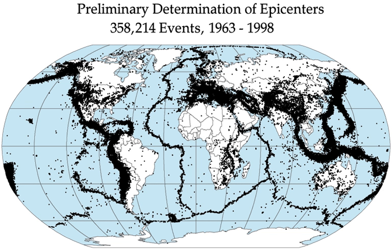In Greek mythology, Poseidon was the cause and god of earthquakes. When in a bad mood, he struck the ground with a trident, causing earthquakes and other calamities, and used earthquakes to punish and inflict fear upon people. In Japanese mythology, Namazu is a giant catfish who causes earthquakes. Namazu lives in the mud beneath the earth and is guarded by the god Kashima who restrains the fish with a stone. When Kashima lets his guard fall, Namazu thrashes about, causing violent earthquakes.